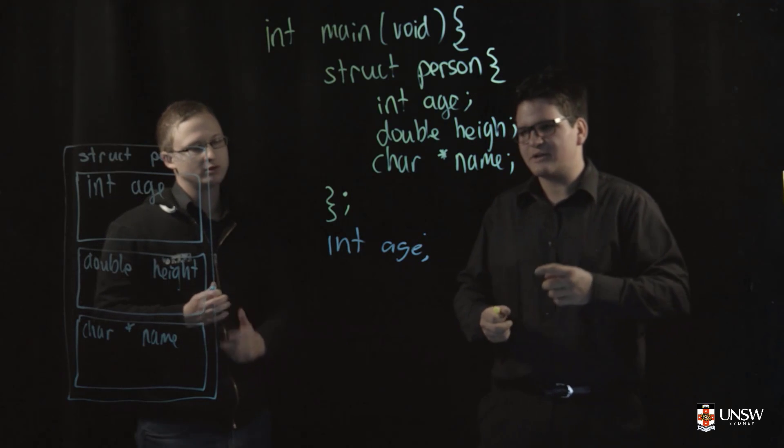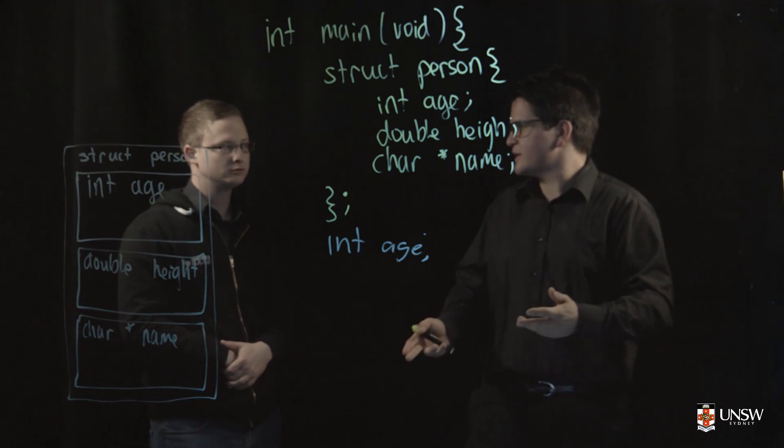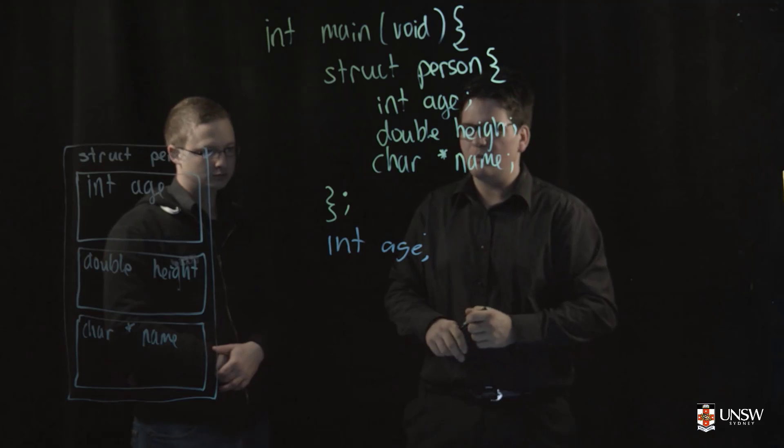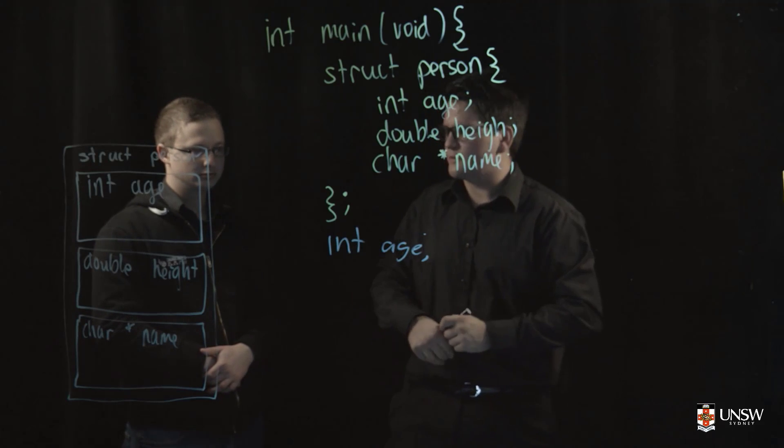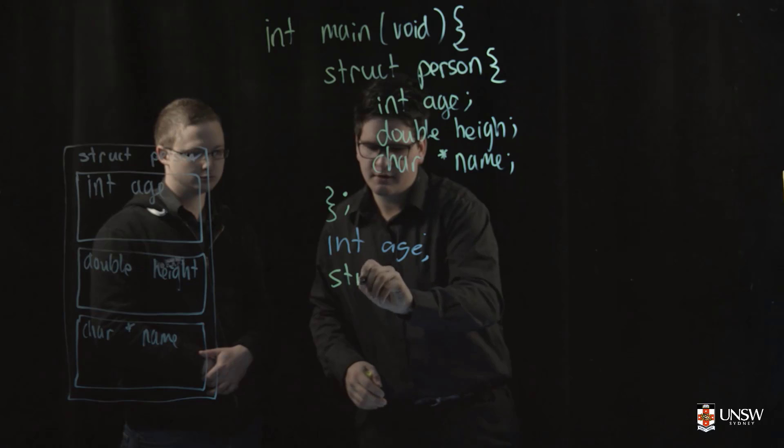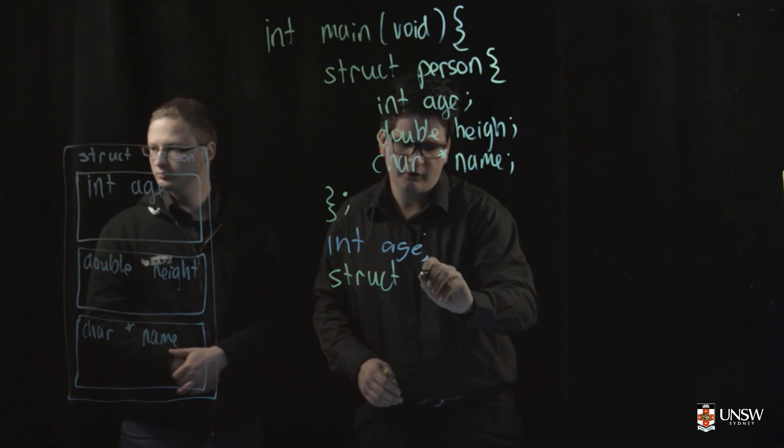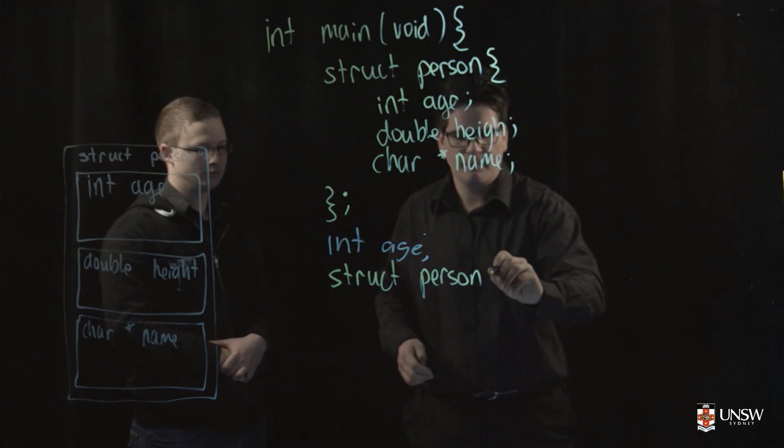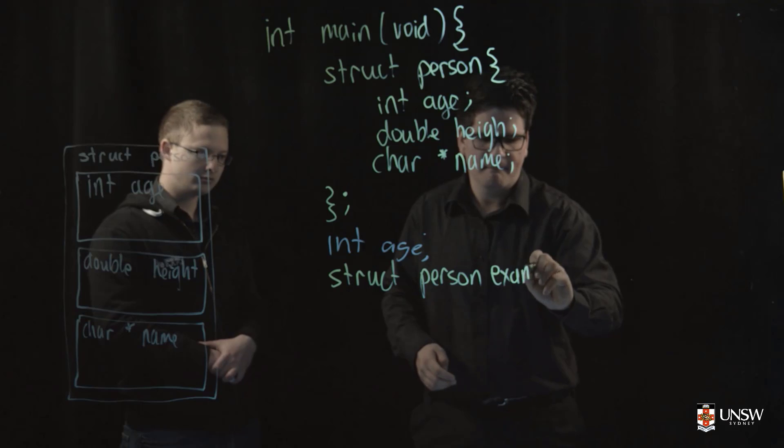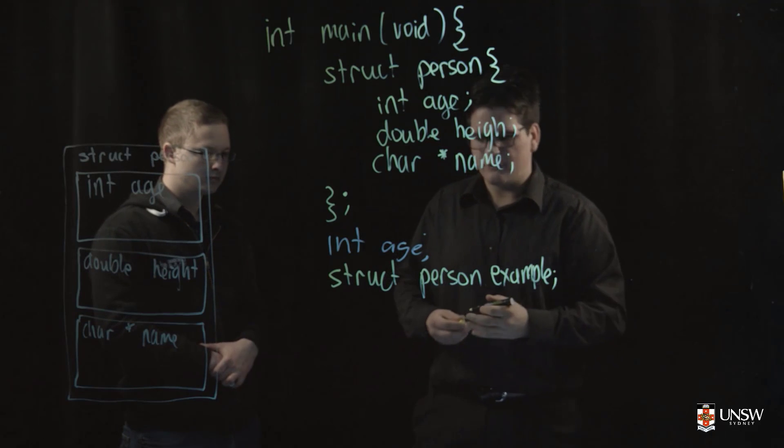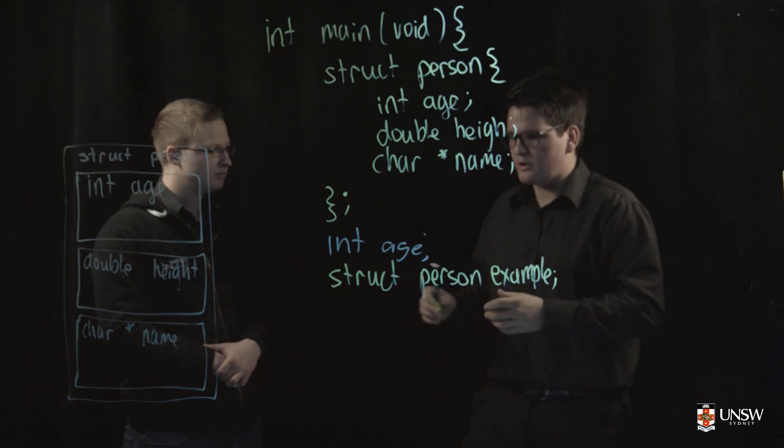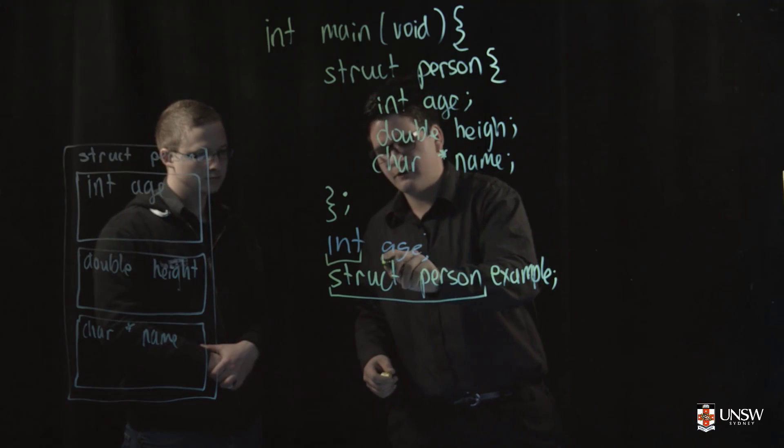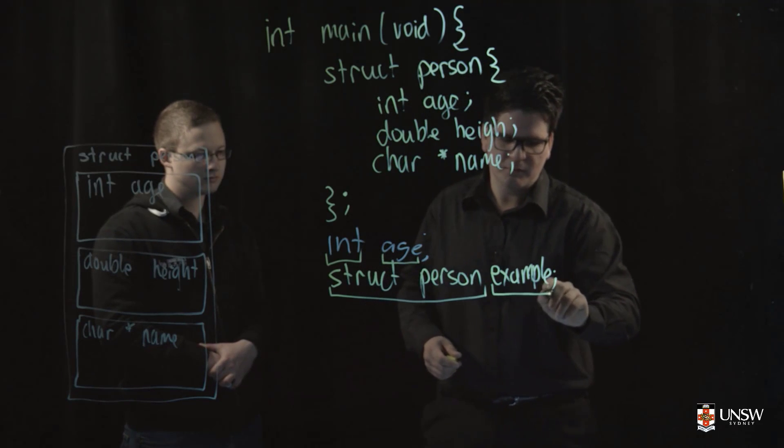Right, so we need to do two things here. We need to declare a variable and then we need to initialize the values of that variable. And so what we're going to do is similar to your line of code that you have here, we're going to declare a struct person. So I'll just write out struct person, and then we can give our struct person variable a name and we can call it perhaps example. So this is a very similar line of code to what you have. You have the data type here, I have a data type here, struct person, and then you have the name of your variable here and I have the name example in the same format.